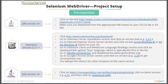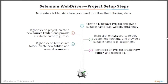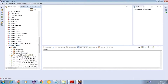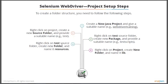Now let's talk about the project setup steps. First, create a new Java project and give it a name. Second, create a new source folder and provide a suitable name. Then right-click on the test source folder, create a new package and provide a suitable name for your test scripts. We already have a package called 'selenium examples' so we'll use that.